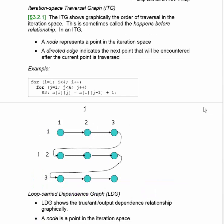Two kinds of graphs can help us see these relationships. First is the iteration space traversal graph, or ITG. It shows the order of traversal from one iteration to another. A node represents a point in the iteration space — in other words, a set of i value and j value, like i equals 1, j equals 2.